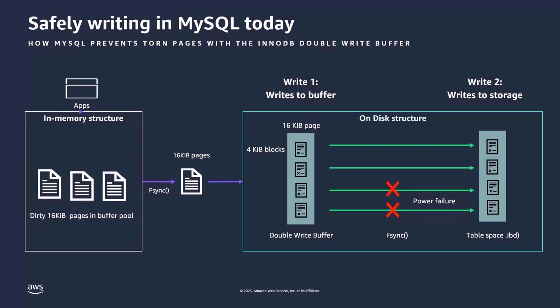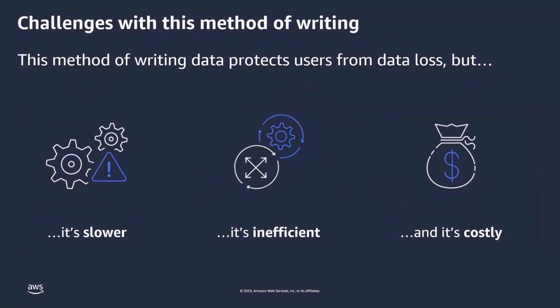While the Double Write Buffer protects user data from data loss, it does have some drawbacks. As you might imagine, it is slower — writing data twice is going to take twice as long as a single write. It is also inefficient because it takes twice as much IOPS bandwidth, which reduces your database throughput as well as performance. And finally, it's expensive. For customers who have a high volume of concurrent transactions, they'll need to provision additional storage IOPS to meet their performance requirements.